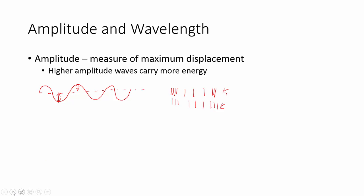Wavelength is the distance between identical points on waves. I have distance between crests but it doesn't have to be. It can be from here to here. Those are identical points. It could be from trough to trough.